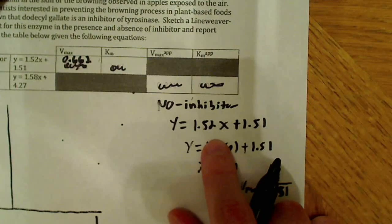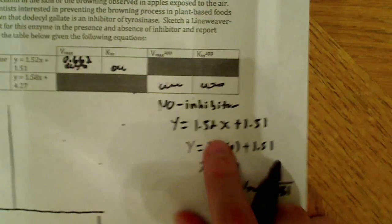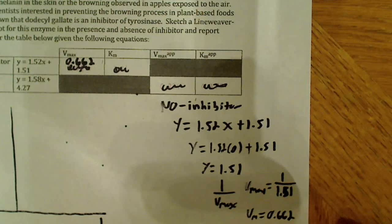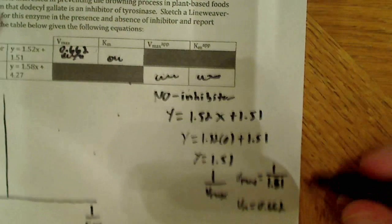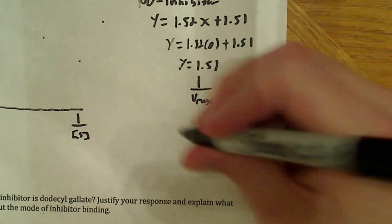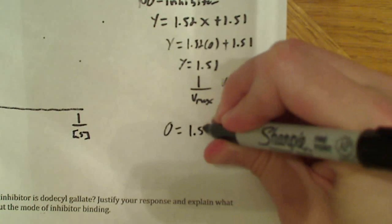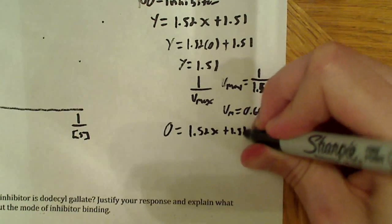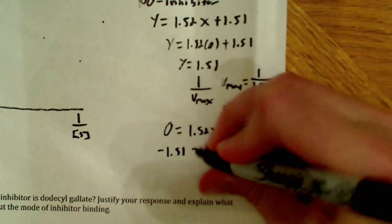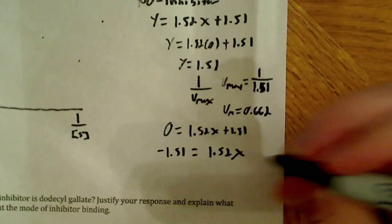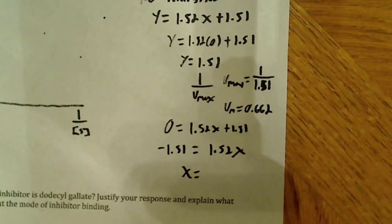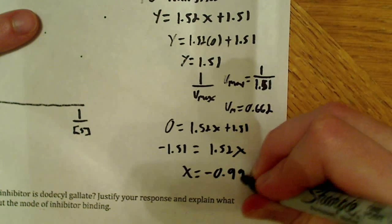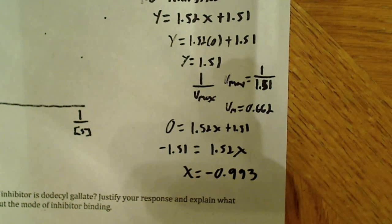Now for the X-intercept, which corresponds to KM, I set Y equal to 0. So 0 equals 1.52X plus 1.51. Subtract 1.51 from both sides and I get X equals negative 1.51 divided by 1.52, which gives me negative 0.993.